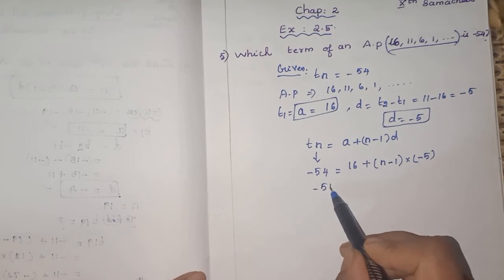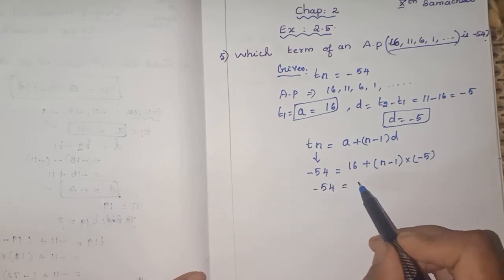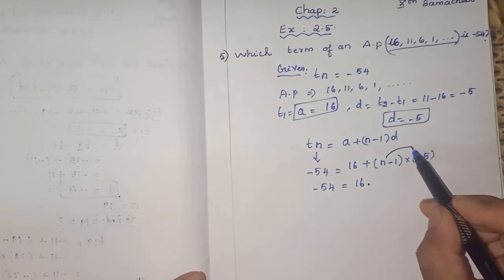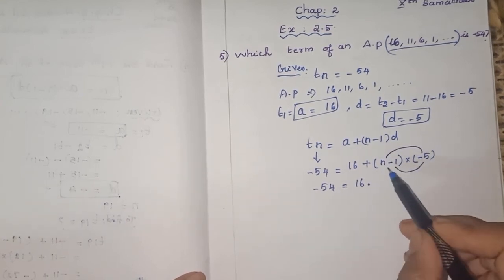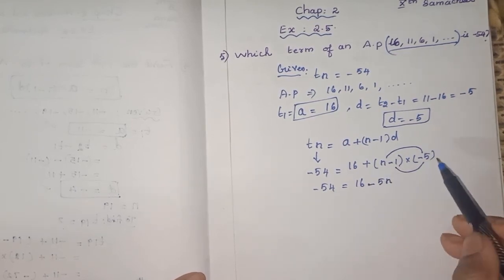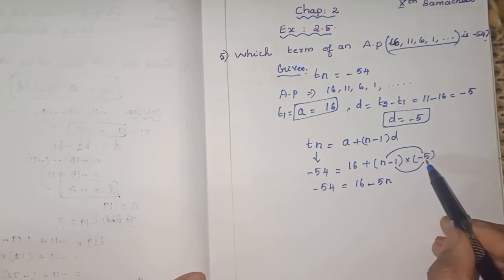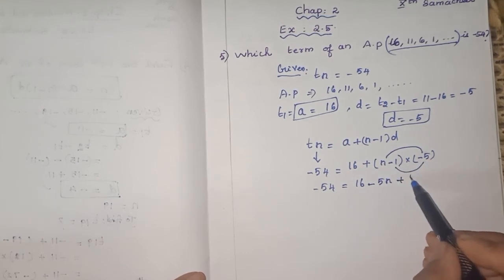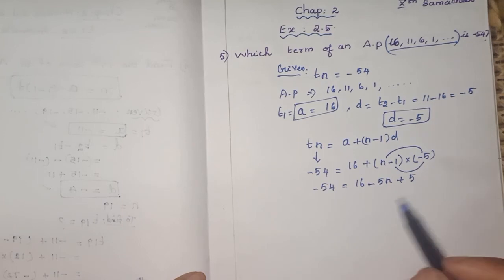Now what will happen? Minus 54 equals 16 plus - you are going to multiply this n into minus 5, each term. So n into minus 5 is what? Minus 5n. Plus minus becomes minus. Next, minus 1 into minus 5, it is plus 5. So you are getting like this.